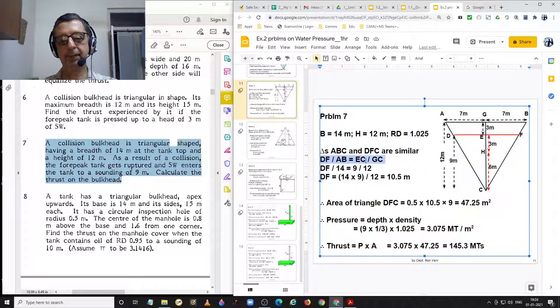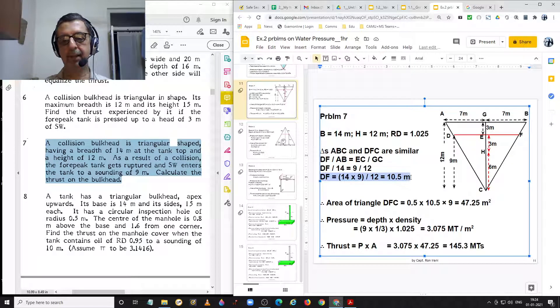Out of these four, three are known to us. AB is 14 meters, EC is 9 meters and GC is 12 meters. Therefore, we have DF is equal to 14 into 9 divided by 12 equal to 10.5 meters. So now we know the value of DF, 10.5 meters.